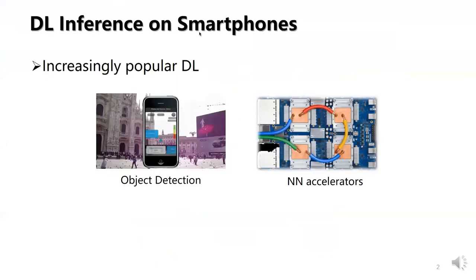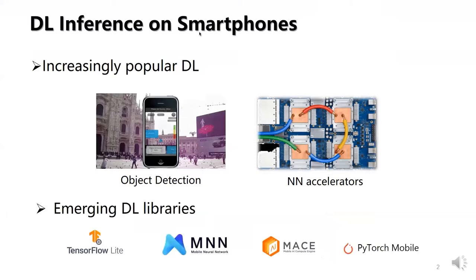Deploying deep learning on mobile devices has been a notable trend. It is reported that DL library apps on Google Play market have increased in recent years. So, optimizing inference performance has been a hot topic, and more and more DL libraries are emerging.